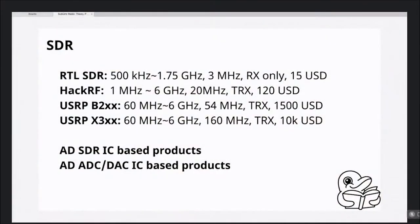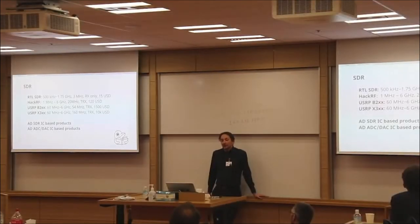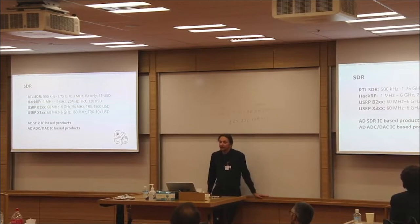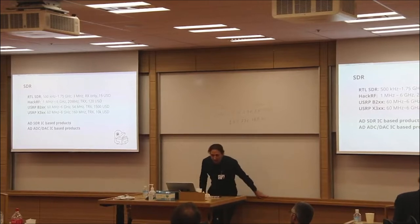For software-defined radio, the cheapest option is the RTL-SDR. Originally it was built on a chip designed for digital video broadcasting. At some point, the community found it capable of giving you raw IQ data from the SDR part and started using it as software-defined radio. It costs just 10 to 15 USD, you can buy it almost everywhere, and it gives you 3 MHz of bandwidth. It works in quite a broad range of frequencies, from 500 KHz to almost 2 GHz.